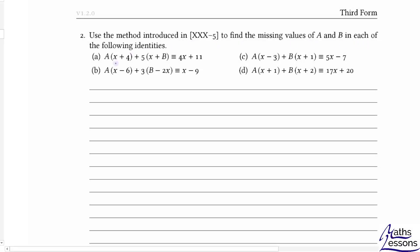Okay, on this question we are equating coefficients with these identities to find values of A and B. For problem 2a, we multiply out the brackets to get ax plus 4a plus 5x plus 5b is equivalent to 4x plus 11.